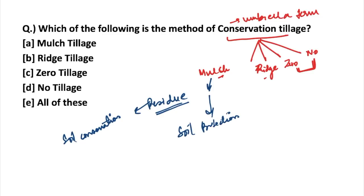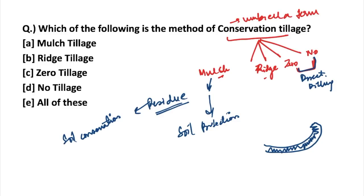Next is ridge tillage — this is a system involving scalping and planting on ridges which are built during the cultivation of the previous year's crop. Whatever ridge was built during the previous year's crop is tilled at the time of ridge tillage. Another method is zero tillage or no tillage, also known as direct drilling — it is a way of growing crops or pasture from year to year without disturbing the soil through tillage.